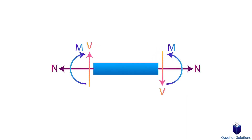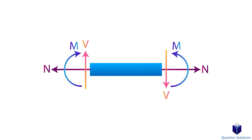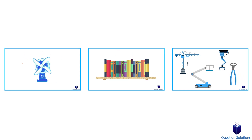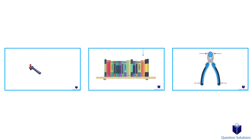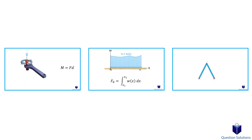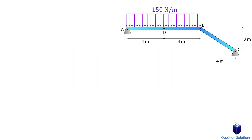Whenever we cut a member we assume these forces to be drawn like this. If we get a negative answer, all it means is that it's opposite to our assumption. To figure out these values you should be familiar with finding moments, distributed loads, and two-force members. There are videos on all of these subjects, so if you need a refresh please take a look at the description.